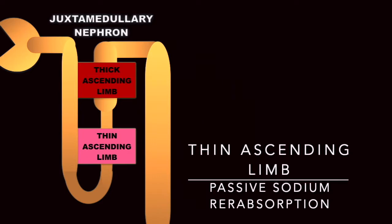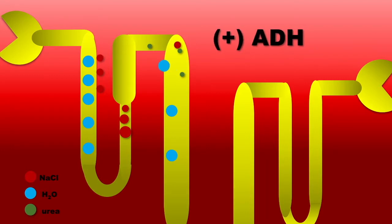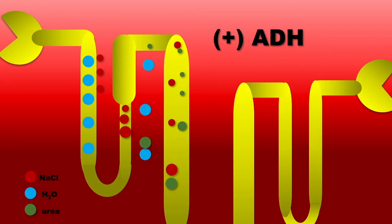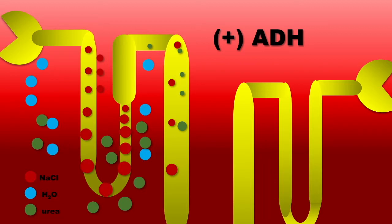In addition, juxtamedullary nephrons also have a thin ascending limb aside from a thick loop segment. The mechanism is similar in the thick ascending limb in terms of sodium reabsorption. The main difference is with antidiuretic hormone — not only water is reabsorbed, but also formation of urea channels in their inner medullary collecting duct. The urea cycle enhances the osmotic movement of water out of the descending limb, increasing the filtrate's concentration of sodium chloride — we call it the concentrating effect. It can also account for the passive movement of sodium chloride out of the thin ascending limb to the interstitium: the diluting effect of the countercurrent mechanism.